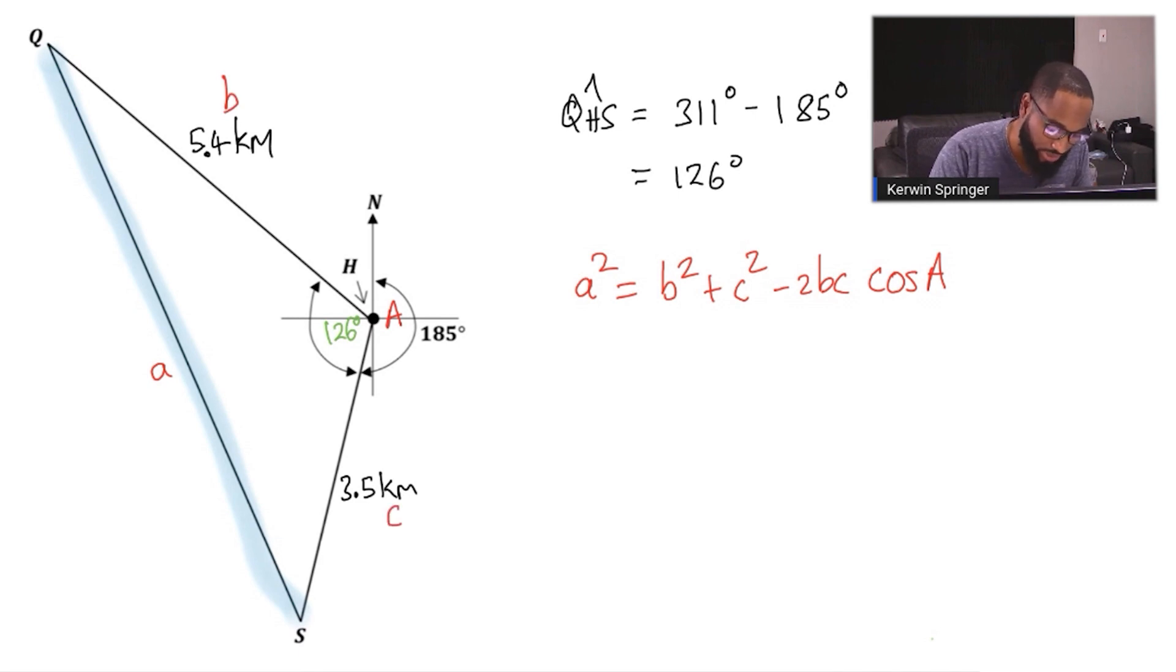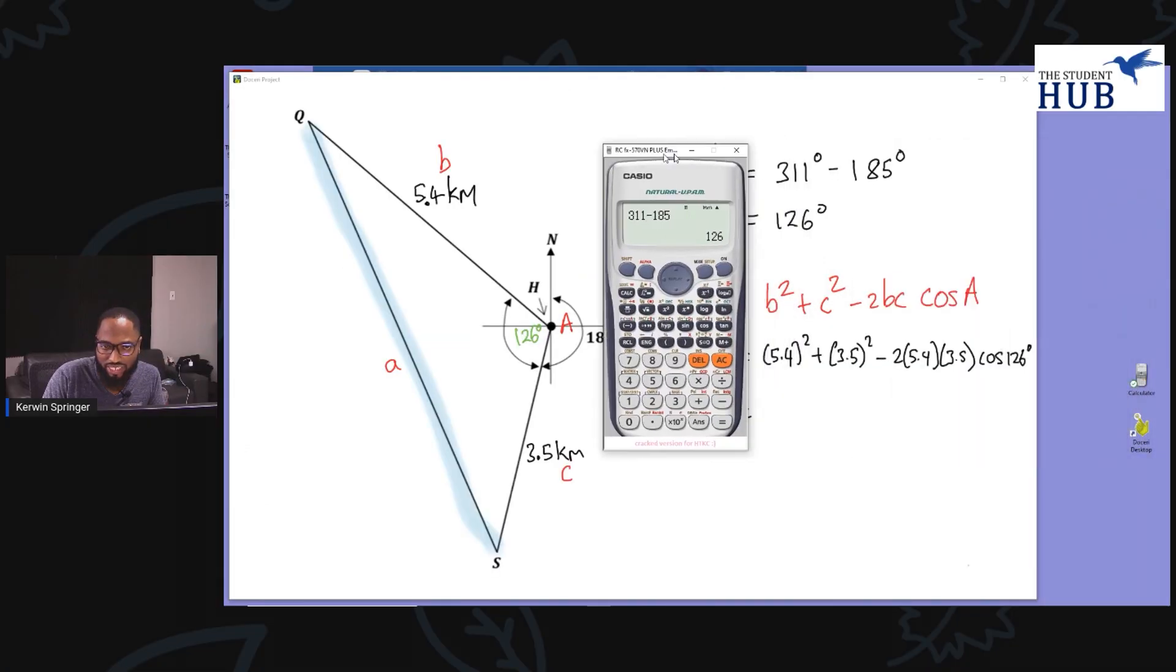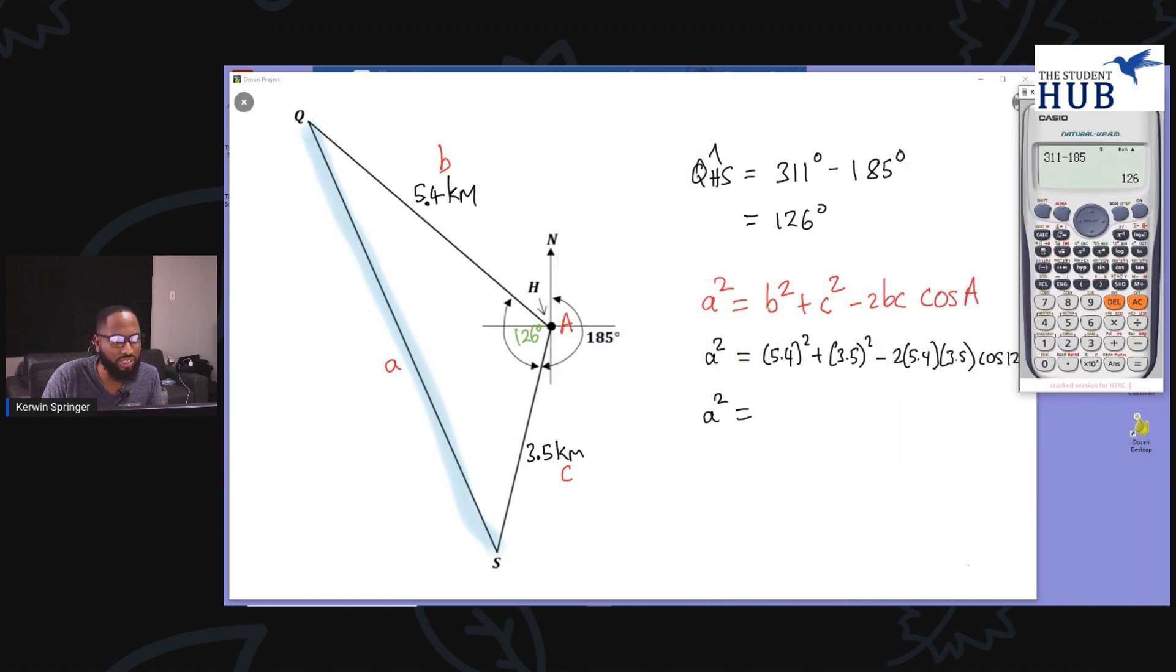Let's do some substituting. a² which is what we're trying to find is equal to 5.4² + 3.5² - 2(5.4)(3.5) cos 126 degrees. Now you can write out this whole thing in your calculator. Traditionally we record this part and then put minus and then record that part. Let me work the whole thing in the calculator.